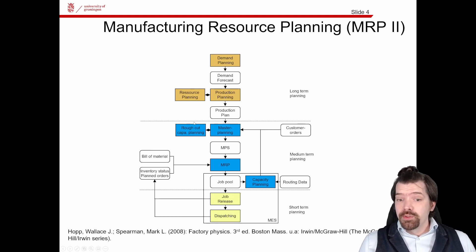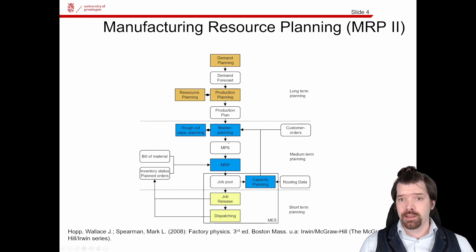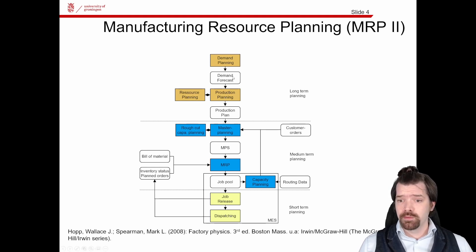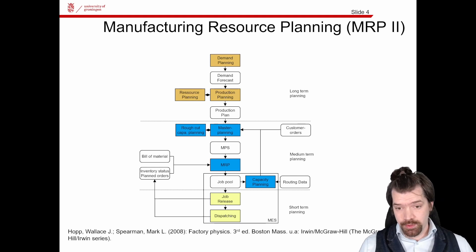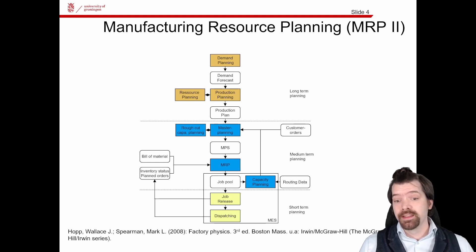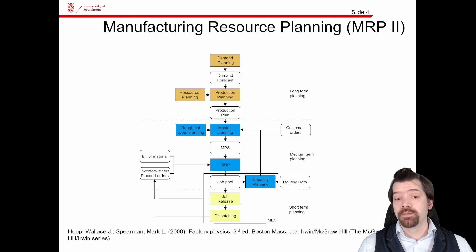Backwards scheduling is also used for the MRP approach. I'm visualizing here the hierarchical planning introduced by Hopp and Spearman in the Factory Physics book. We have long-term planning, medium-term planning, and short-term planning, and we have the production planning method MRP2. In MRP2, backwards scheduling is executed in the MRP itself: the first step is netting, the second step is lot sizing, and then we have the shift to identify the starting date for the production order, which is done by backward scheduling. The final step is then the bill of material explosion.